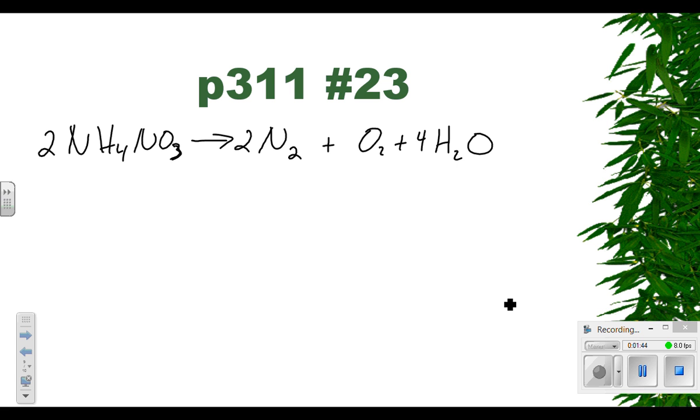The mass of each product gas if we have 1.25 grams of ammonium nitrate. So 1.25 grams and we need to know all three of those, so that's what we're going to find. So we start with our given 1.25 grams of NH4NO3.